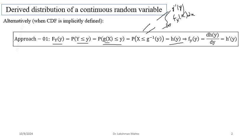Once you compute the CDF of Y as an explicit function h(y), by differentiating it you get the probability density function of Y. The relation between CDF and PDF of a continuous random variable: you obtained the CDF by integrating the PDF, so to recover the PDF you differentiate the CDF — integration and differentiation are inverse operations.